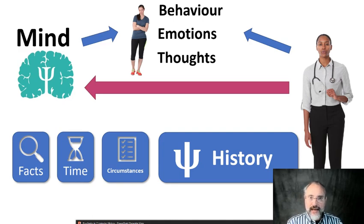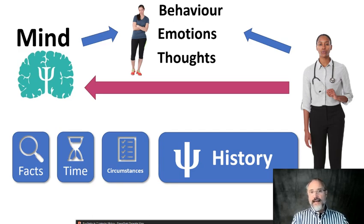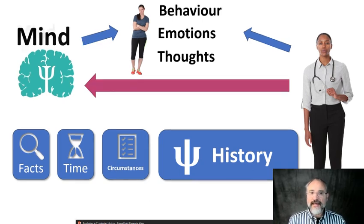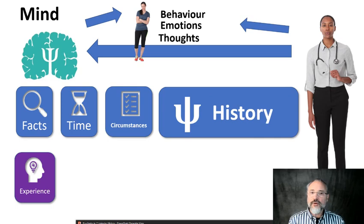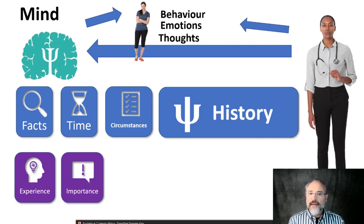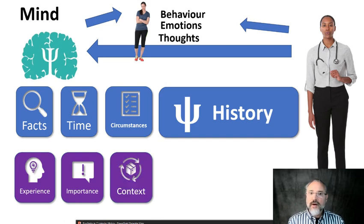But we do something else. We don't just take a history. We need to understand a little bit more than just the history. We need to understand what are the experiences that led that patient to behave in a particular way, or where those emotions come from. We need to understand what are the values of the patient, what's important. And we need to understand what is the context and what is the main narrative.